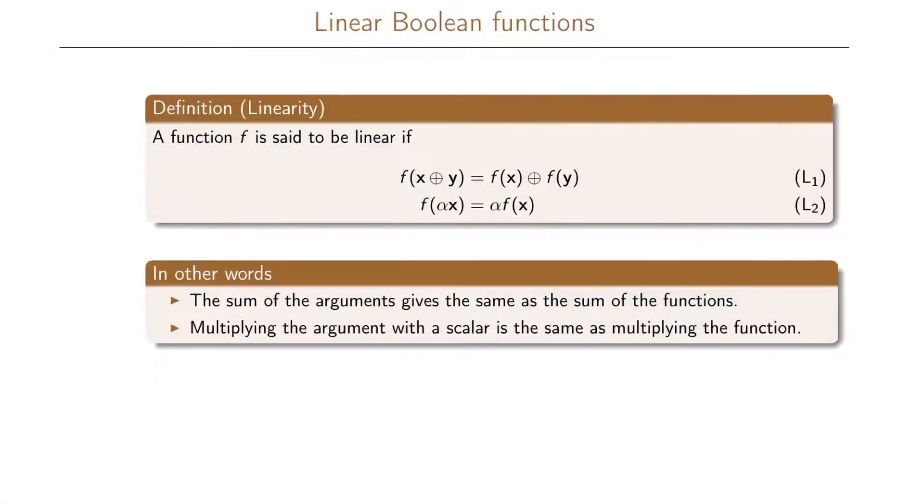Now we're going to focus on Boolean functions that are linear. The definition of linearity is that a function f is said to be linear if f of x plus y is the same as f of x plus f of y, and f of alpha times x is the same as alpha times f of x. This can also be phrased as that the sum of the argument gives the same as the sum of the functions, and multiplying the argument with the scalar is the same as multiplying the function with the scalar.